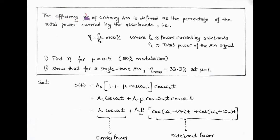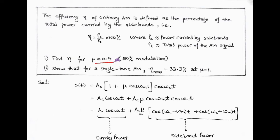The question is: the efficiency eta of ordinary AM is defined as the percentage of the total power carried by the sidebands. That is, efficiency eta equals sideband power divided by total power, multiplied by 100%. First, we have to determine efficiency for modulation index mu equals 0.5, that is 50% modulation. Second, show that for a single-tone AM, maximum efficiency is 33.3% at modulation index mu equals 1.